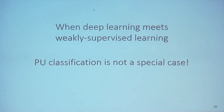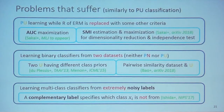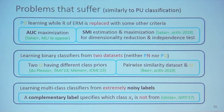I gave PU learning as an example, but I must say that when deep learning meets weakly supervised learning, PU classification is not a special case. In our lab, we have worked on several problems: PU learning with AUC maximization and SMI estimation rather than standard ERM; unlabeled-unlabeled learning where we learn a binary classifier from two datasets; and learning a binary classifier from similarity-dissimilarity labeled data.